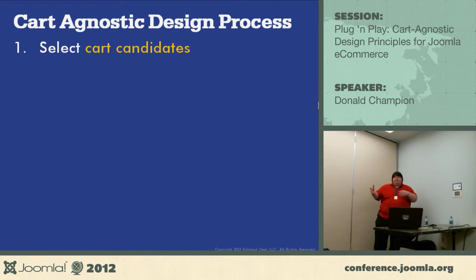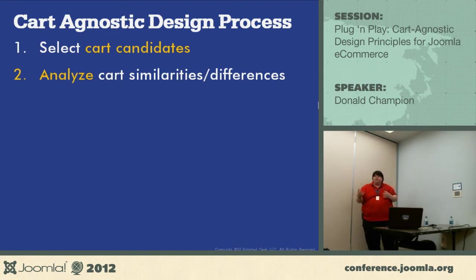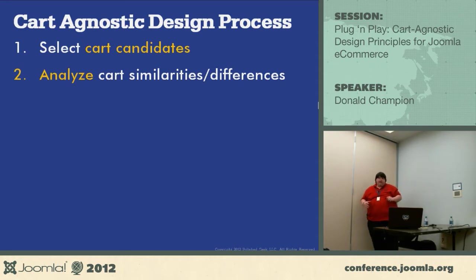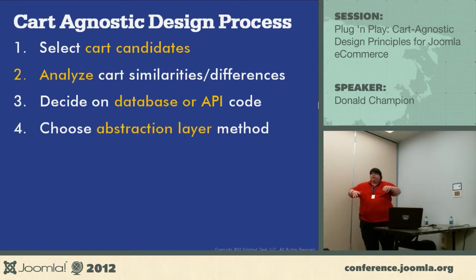This is a lot to pick from and they each have their own niches — that's what you have to decide, where your niche is and where you're going after these. Then you have to analyze these carts: what similarities, what differences, how difficult is it going to be to program for each cart? Decide whether you're going to talk directly to the database or use APIs if they're available, because for some carts they're not always available or documented.